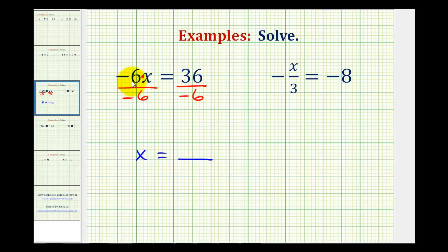It would be incorrect to add 6 to both sides because this negative 6 is attached to the variable by multiplication, not by subtraction.